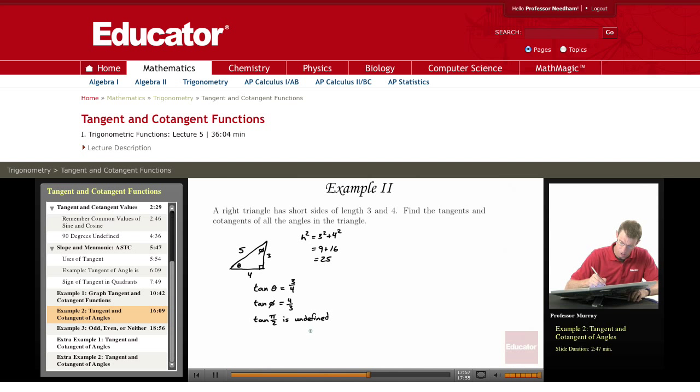Now, cotangent of each of these angles. Cotangent is just the opposite of tangent, in the sense that when tangent is sine over cosine, cotangent is cosine over sine.